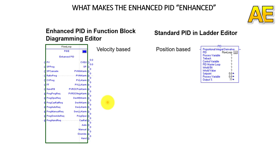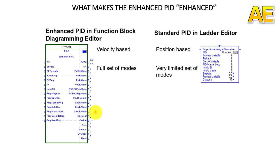The second difference is about mode. With PIDE, we have a full set of modes: program or operator control, cascade or ratio mode, auto, manual, override, and hand mode. But with standard PID, we just have auto, software manual mode, and manual mode.